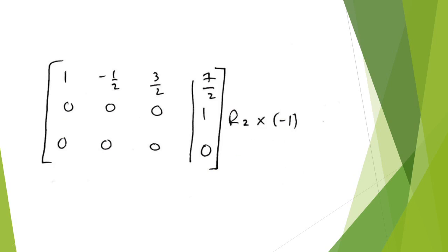Alright, so in the next step, your graphing calculator, or any calculator that can do this operation, is going to put it in reduced row echelon form. And what that is, is the first non-zero element in every row must be positive 1.